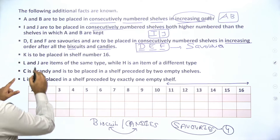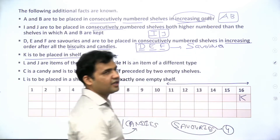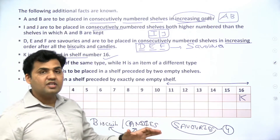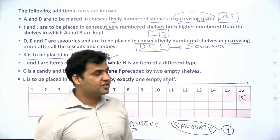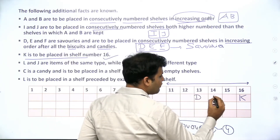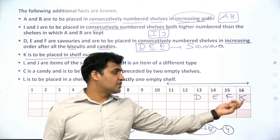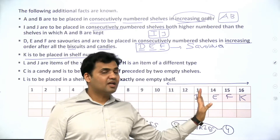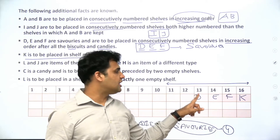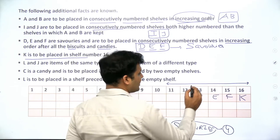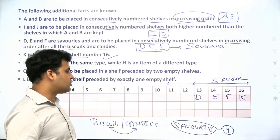K is placed on shelf number 16. Since all savouries must be clustered together and come after shelf 11, K must be clustered with D, E, and F. Therefore D, E, F, and K are all savouries — accounting for all 4 savouries. We are now left with biscuits and candies to be placed on the remaining shelves.